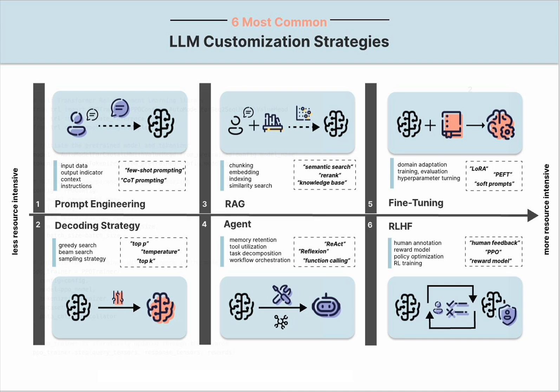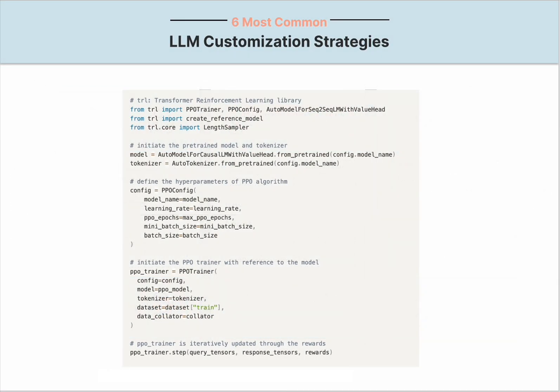The objective is that the policy is updated so the LLM can generate responses that maximize the reward produced by the reward model. This process utilizes the prompt dataset, which is typically a JSON list of prompts, responses, and rewards. The open-source library TRLX is widely applied in implementing RLHF and provides a template showing the basic RLHF setup: initialize the base model and tokenizer from a pre-trained checkpoint, configure PPO hyperparameters such as learning rate, epochs, and batch sizes, create the PPO trainer by combining the model, tokenizer, and training data. The training loop uses the step method to iteratively update the model to optimize the rewards calculated from the query and model response.